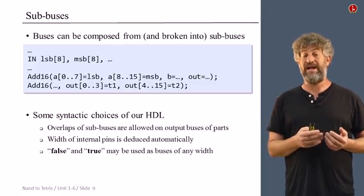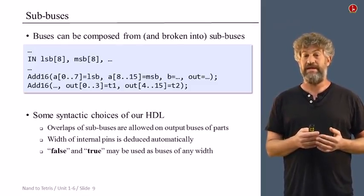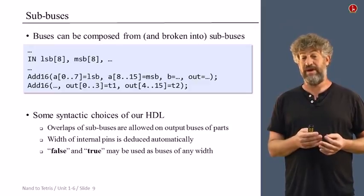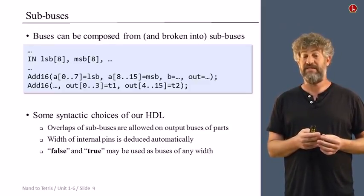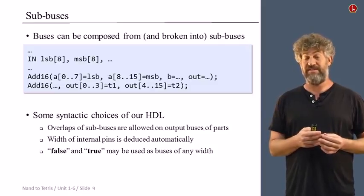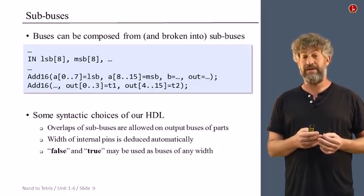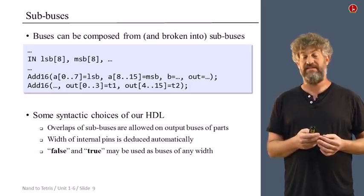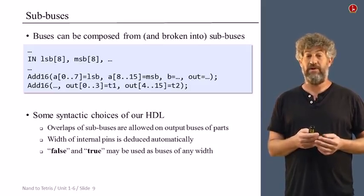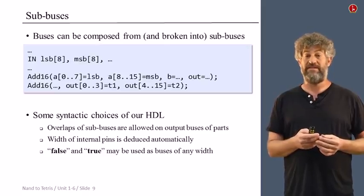And the third syntactic convention that I would like to mention is the fact that if you want to plug lots of zeros, lots of ones into a bus, you can do it together in one command by using true or false as constants. Both of these cases are multiplied. So if you plug true into some bus, each one of the bits gets a value one. And similarly for false where each one of the bits gets zero.